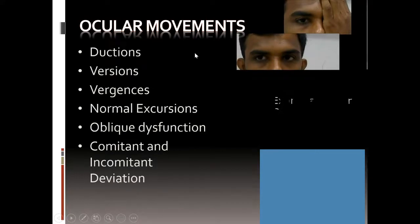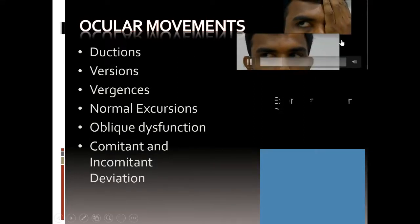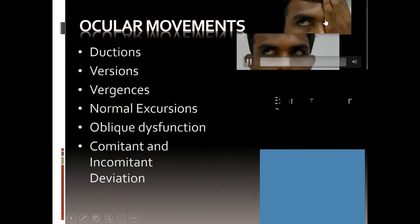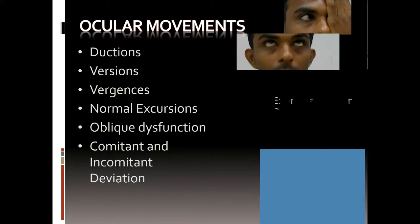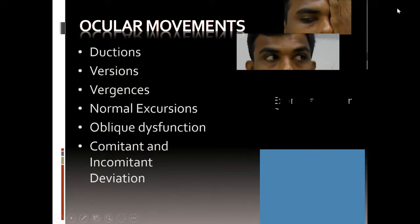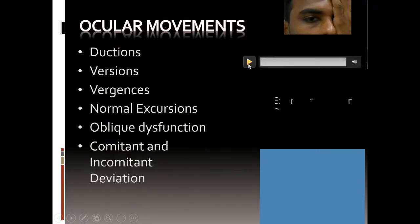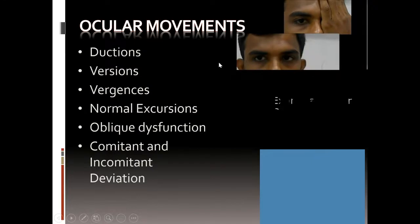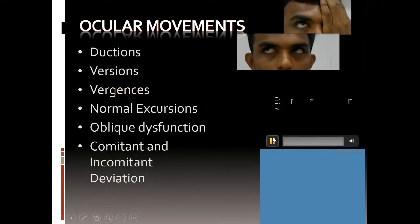Now we come to ocular movements. What you are seeing here is a duction — when you cover one eye you see adduction, abduction, supraduction, and infraduction. When you see them together it is levoversion, dextroversion, elevation, depression, sursumduction, and levosursumduction. When he looks to the left side it is levoversion; when he looks to the right side it is dextroversion. And then there are convergences and divergences — those are the conjugate and disjugate movements.